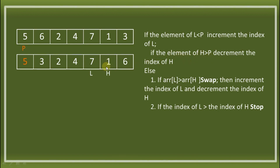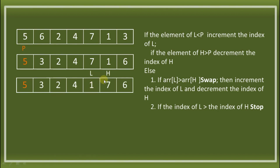Since both conditions are false, check if element of L is greater than element of H: 7 greater than 1 is true, so we swap. After swapping, 1 and 7 exchange locations. Then increment L — L is now at index 5 — and decrement H — H is now at index 4. Now check if L index is greater than H index: 5 greater than 4 is true. So we stop the partition.